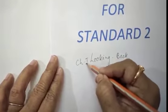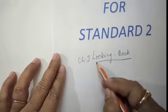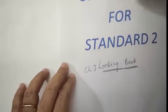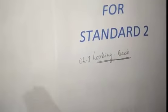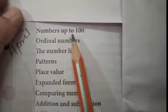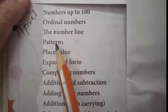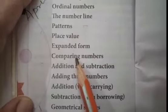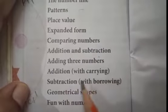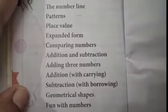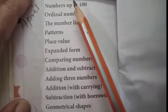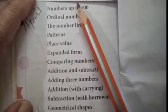This is the chapter 1, looking back. In this looking back, what all contents we will learn? Numbers up to 100, ordinal numbers, the number line, patterns, place value, expand form, comparing numbers, addition and subtraction, adding 3 numbers, addition with carrying, subtraction with borrowing, geometrical shapes, fun with numbers. So all these topics we are going to learn in this chapter.